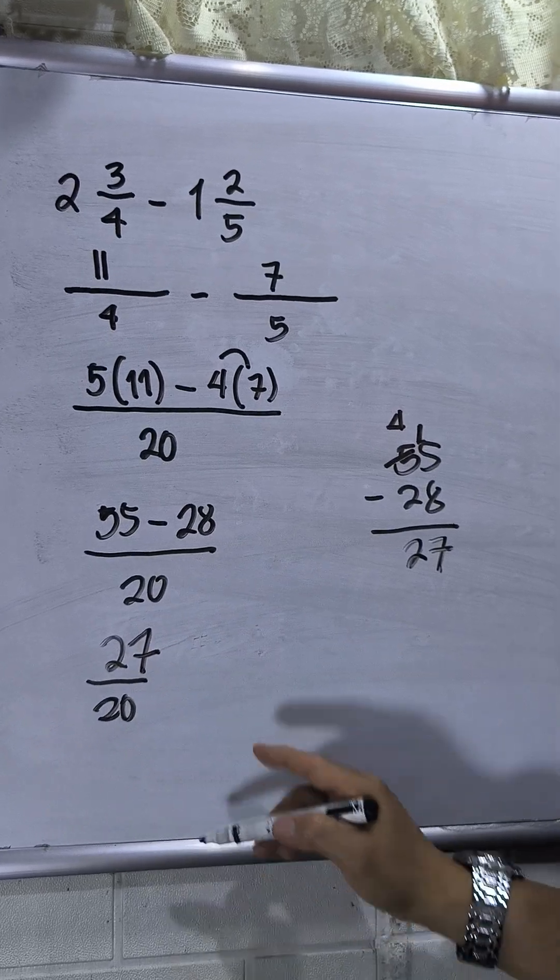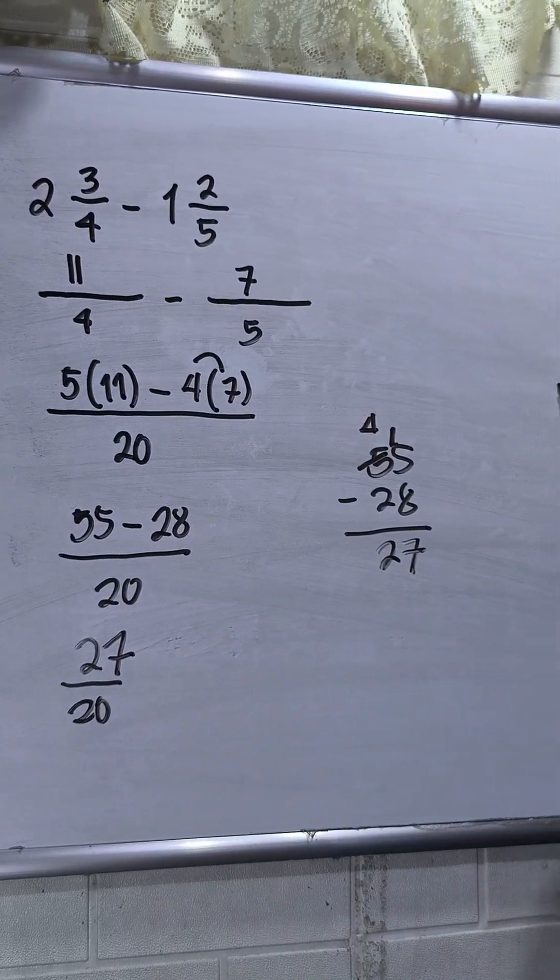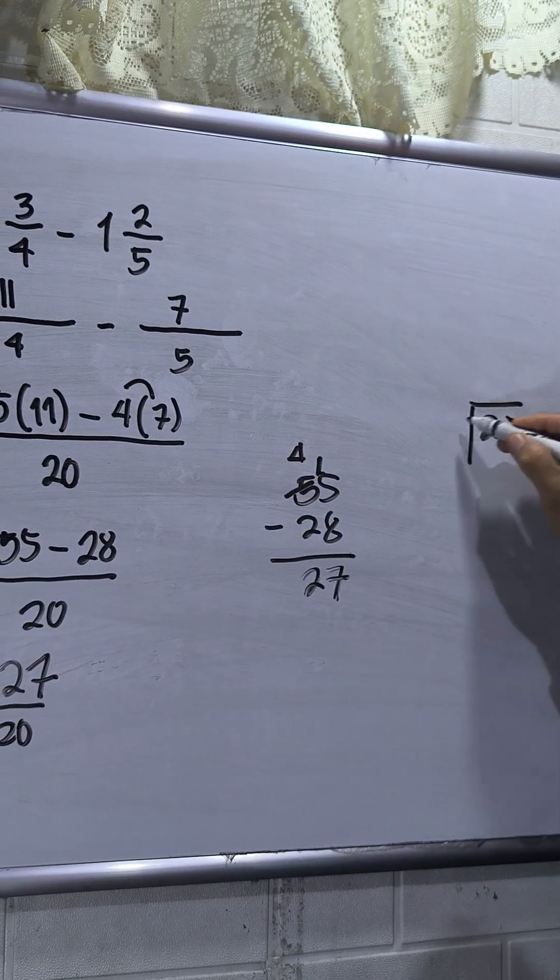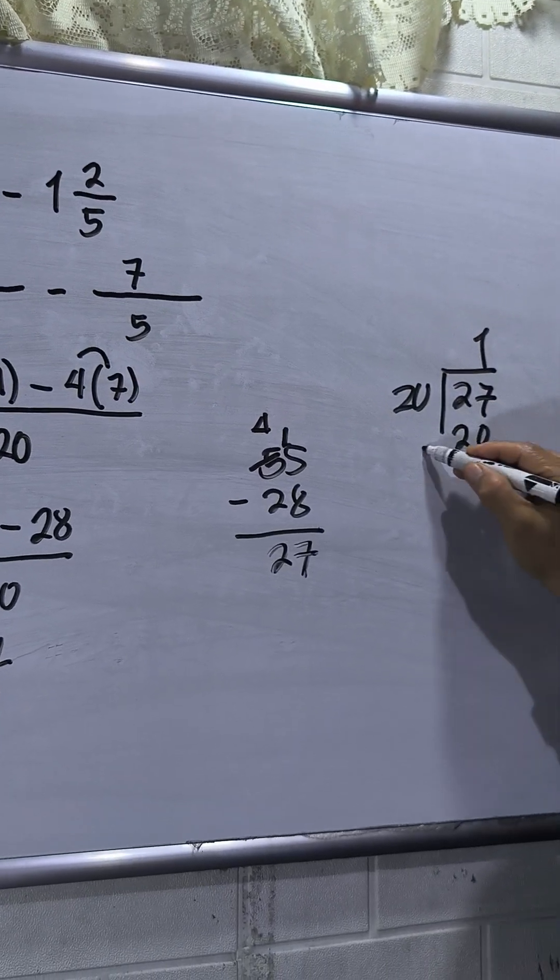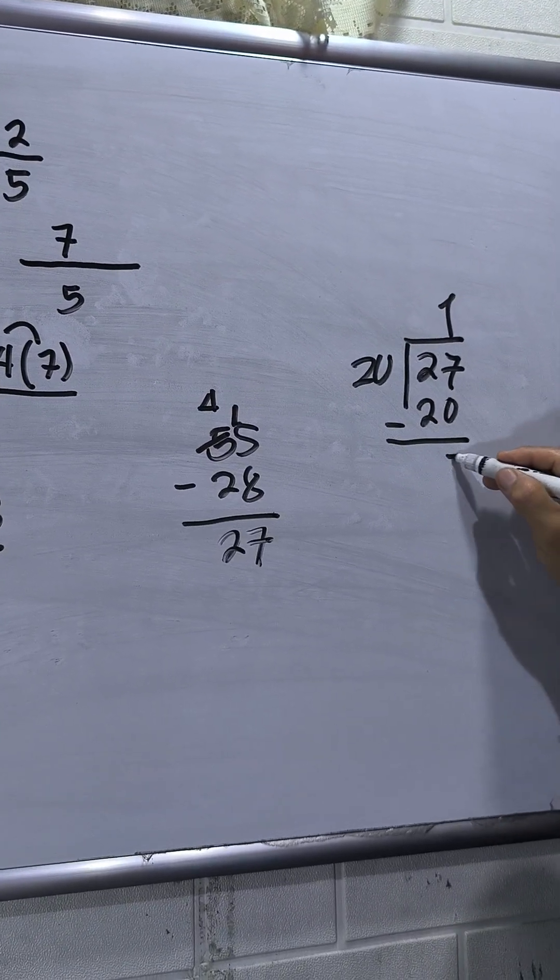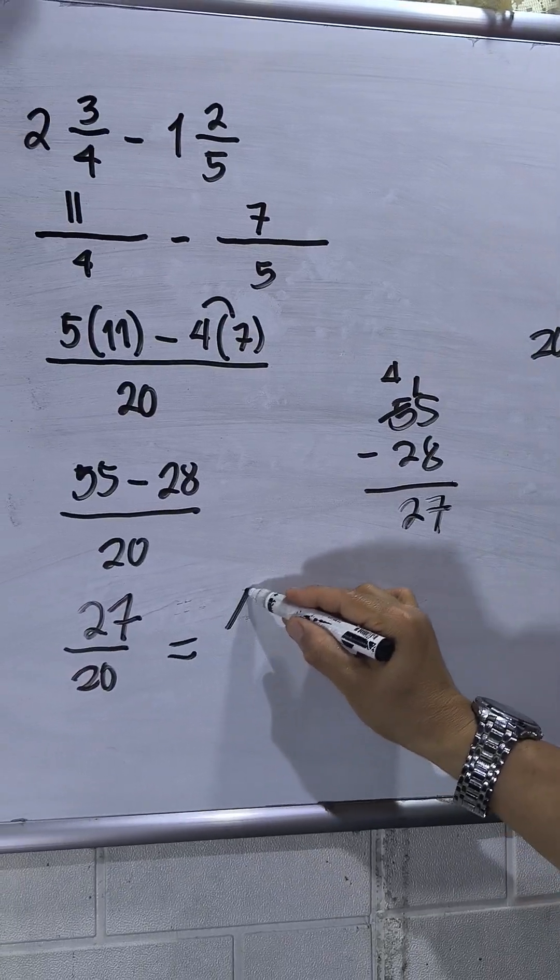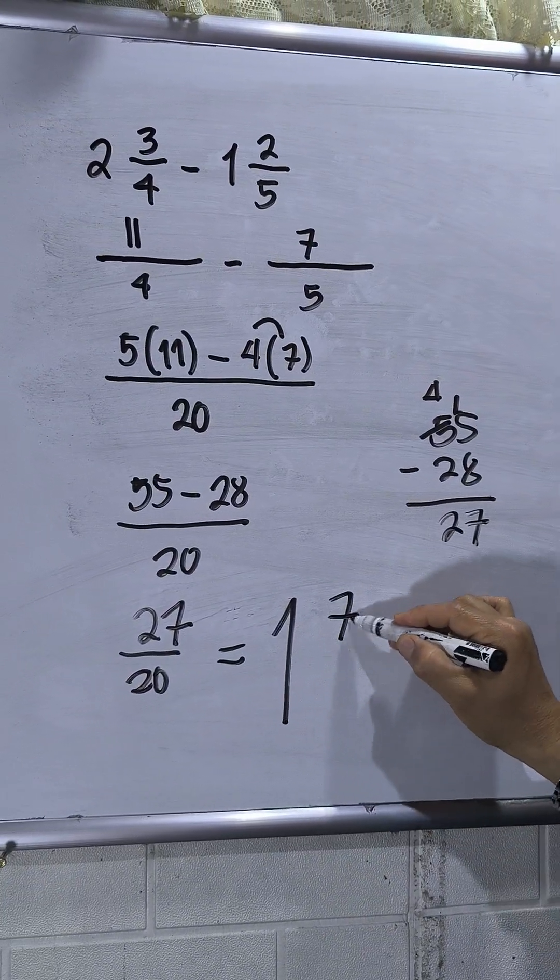Since this is an improper fraction, I need to divide 27 by 20. So this will be 1, 20. Then 27 less 20, that will be 7. So the final answer will be 1 and 7 over 20.